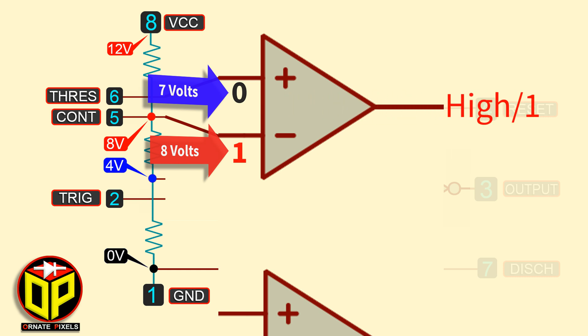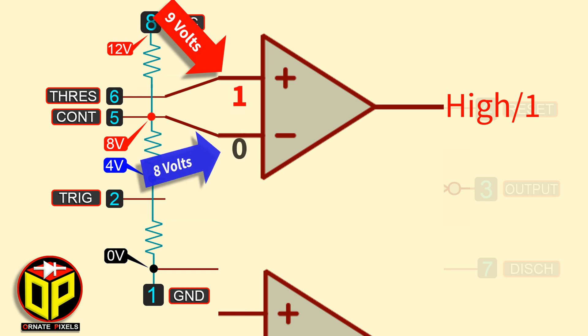Then, if we supply 9 volts instead of 7 volts to the threshold pin, then the non-inverting terminal will be high and the inverting terminal will be low. In this condition, the output will be low.